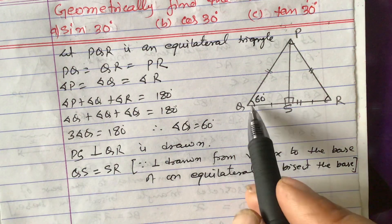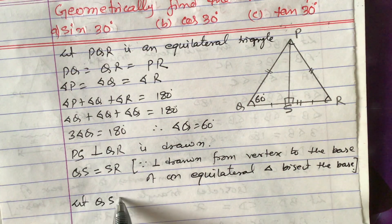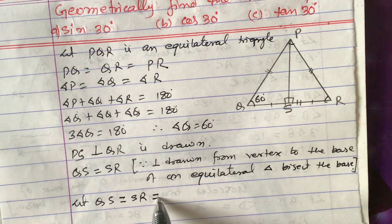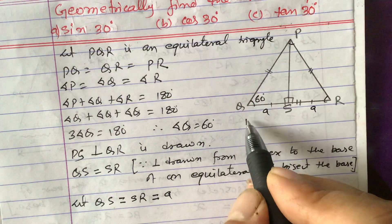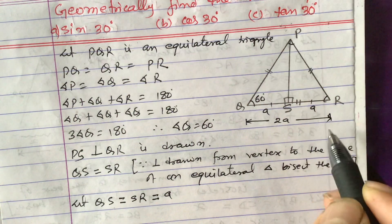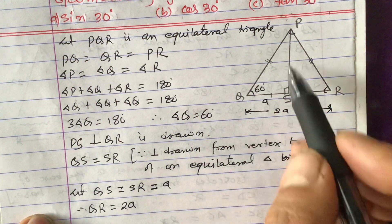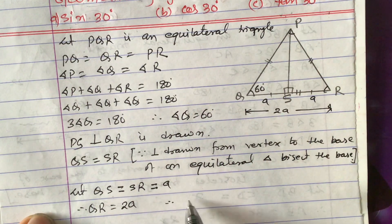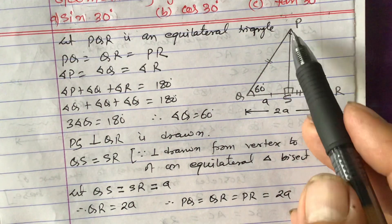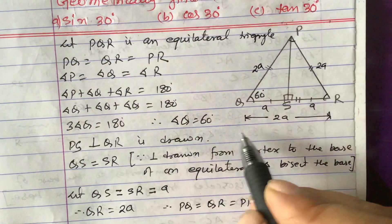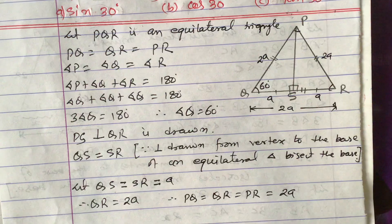Now we can suppose this measurement equals any variable. Let QS = SR = A. Then the total value of QR = 2A. Therefore QR = 2A. And since PQ = QR = PR (equilateral triangle), PQ will also be 2A. So all three sides are 2A, 2A, 2A.